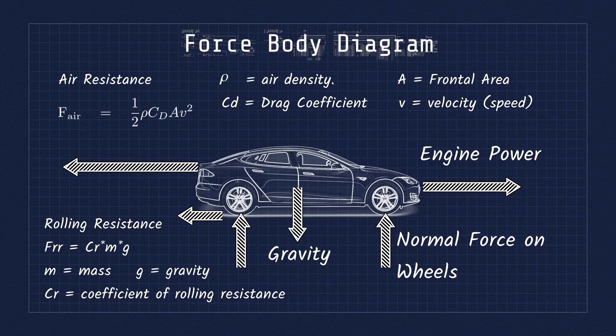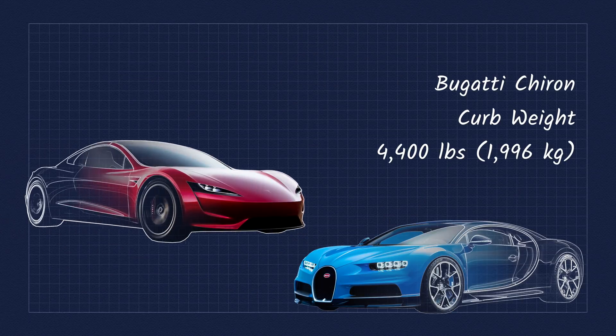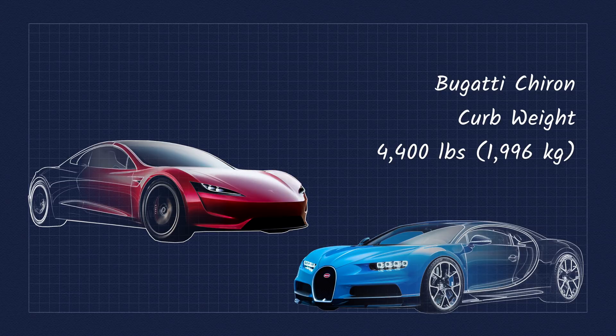Rolling resistance is a function of the contact patch of the tires, the mass of the car, and should be pretty similar between internal combustion and electric cars. The Bugatti Chiron tops the scales at about 4,400 pounds, and the 2020 Tesla Roadster with its long range batteries should be pretty similar as well.